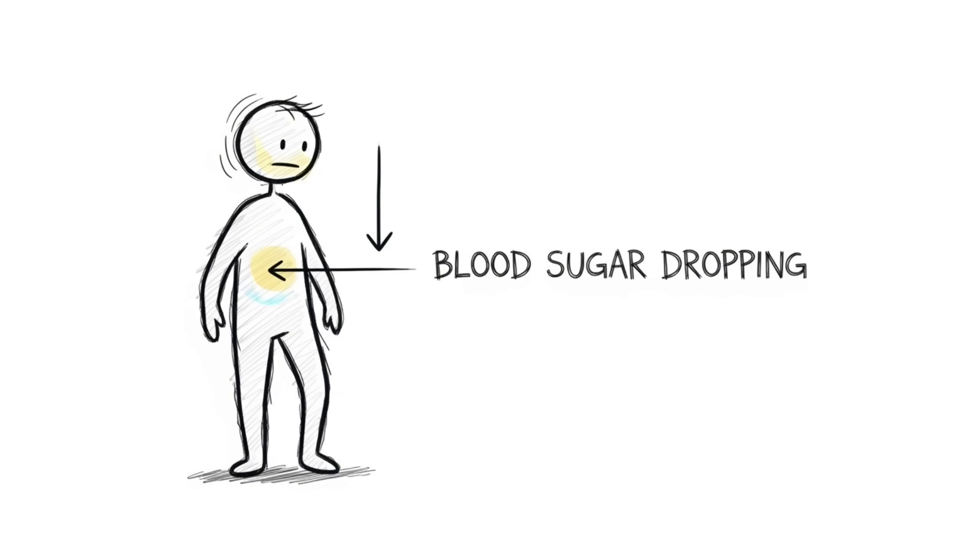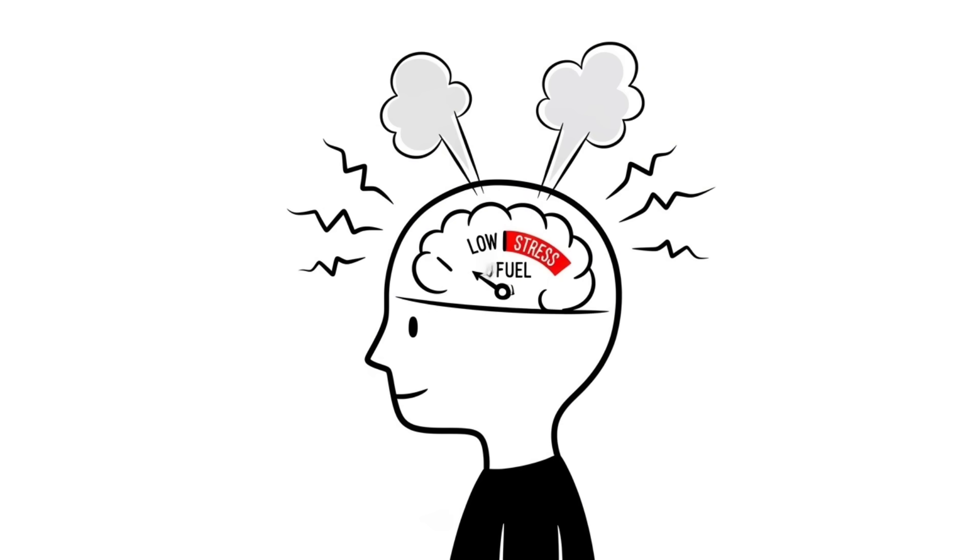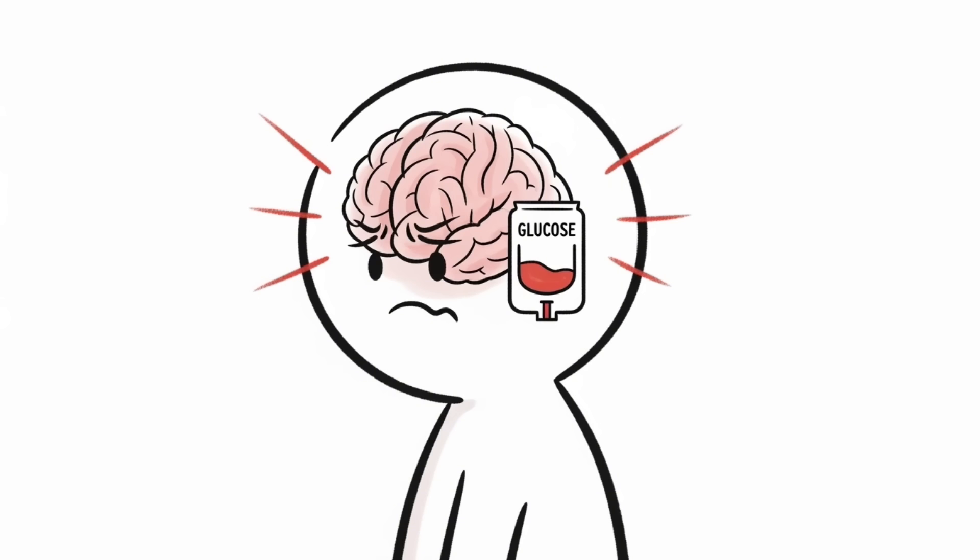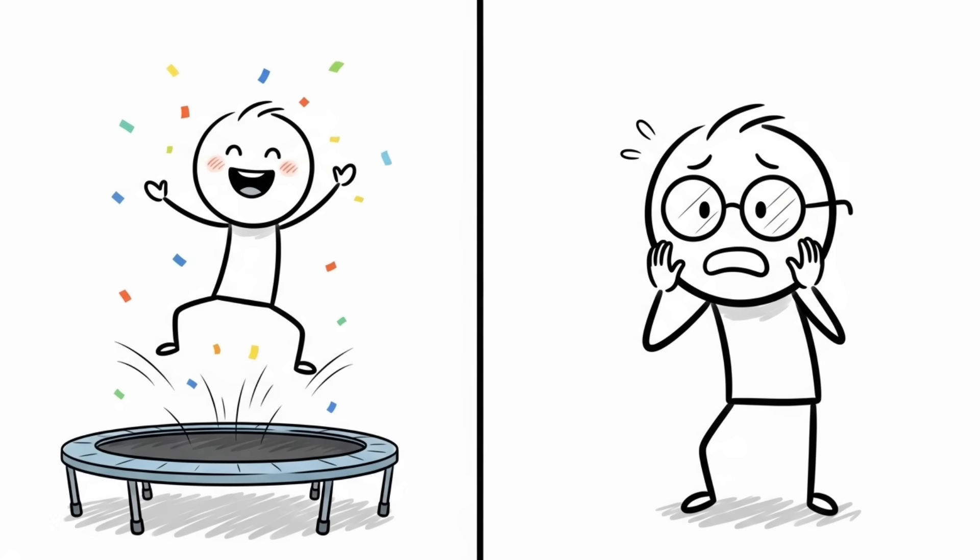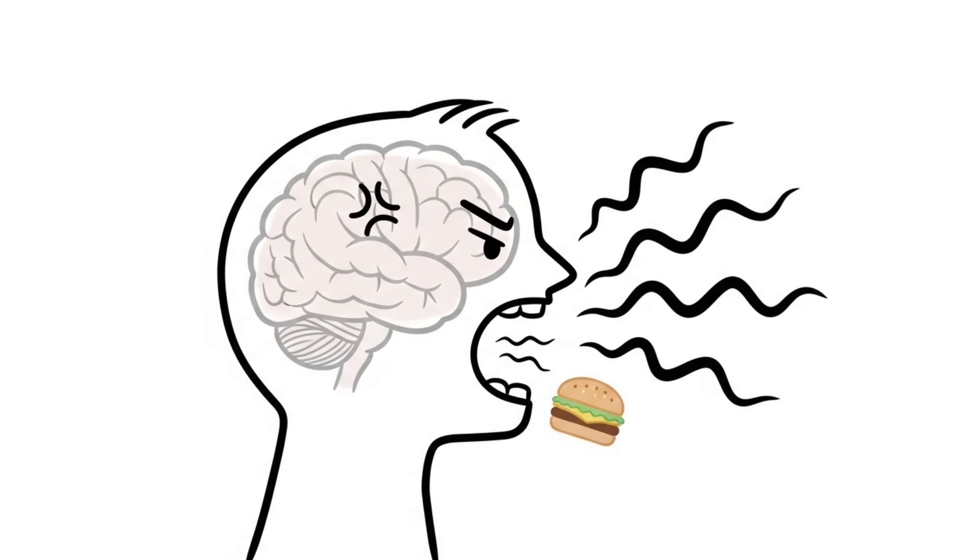When you don't eat, your blood sugar levels drop. And a low fuel brain is a stressed out brain. Your brain runs on glucose and when it's running low, it triggers a stress response. It releases cortisol and adrenaline, the same hormones that kick in when you're in danger. So while a kid bouncing off the walls at a birthday party is just excited, you are dealing with a legit biological threat response. Your brain isn't just being difficult. It's screaming for fuel.